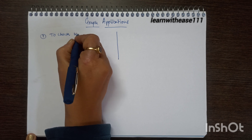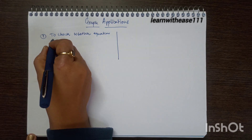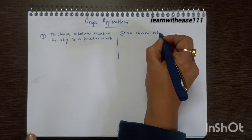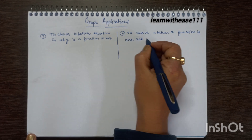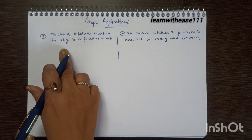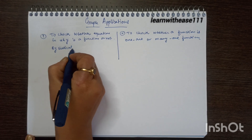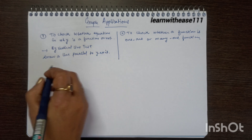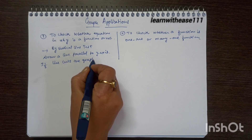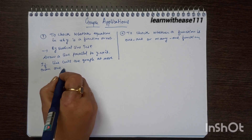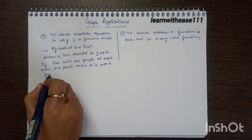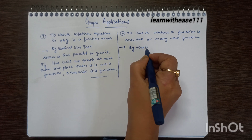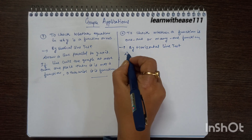First, the graph helps us know whether the given equation in x and y is a function or not. To check this, we draw a vertical line — this is called the vertical line test. We draw a line parallel to the y-axis. If this line cuts the graph at more than one place, then it is not a function; otherwise it is a function.